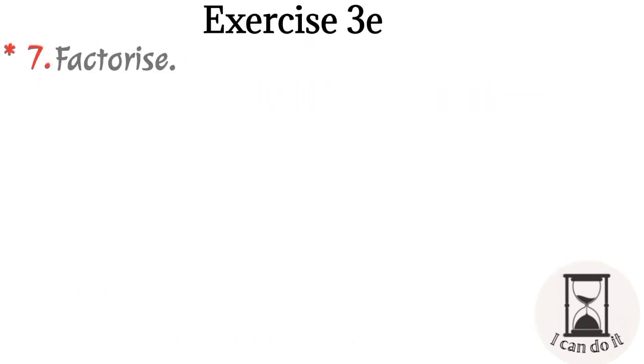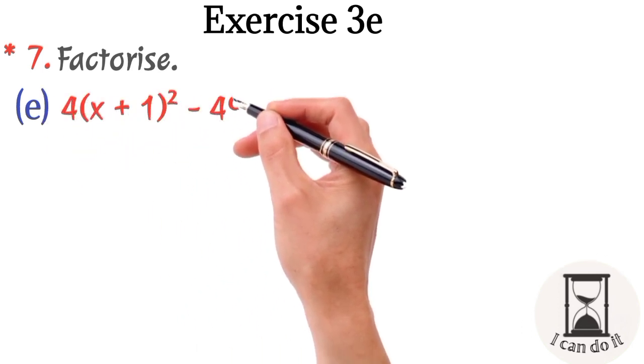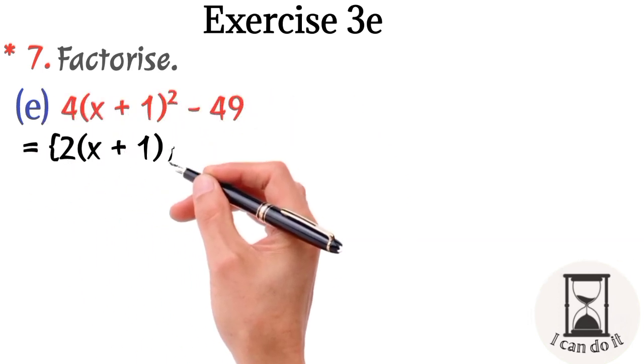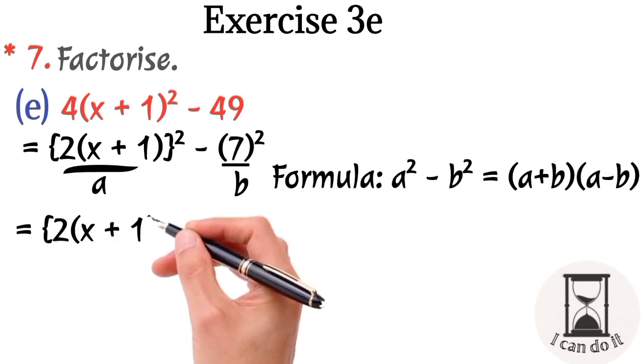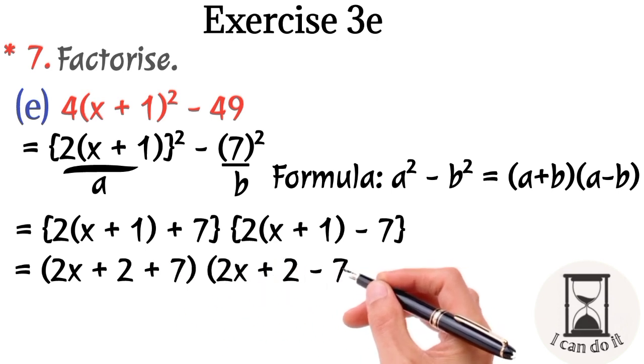Here comes part e. 4(x plus 1) whole square minus 49. We'll take the square root of 49, that is 7. Putting values of a and b, multiplying 2 with (x plus 1), simplify it and done.